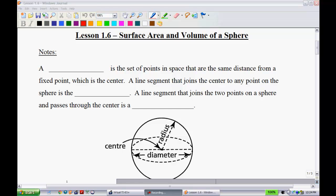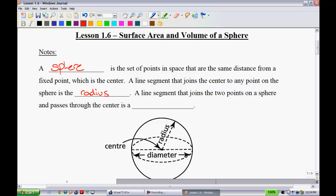So, the notes. A sphere is a set of points in space that are the same distance from a fixed point, which is the center. A line segment that joins the center to any point on the sphere is the radius. A line segment that joins two points on a sphere and passes through the center, of course, is known as the diameter.